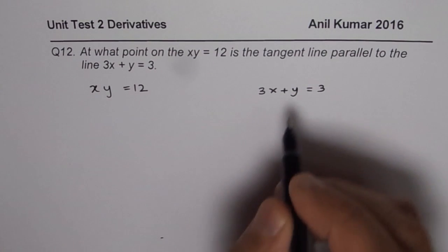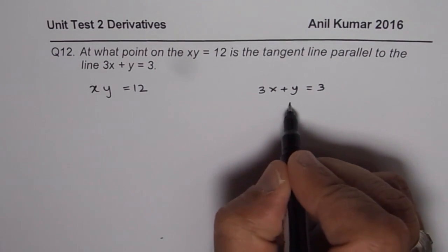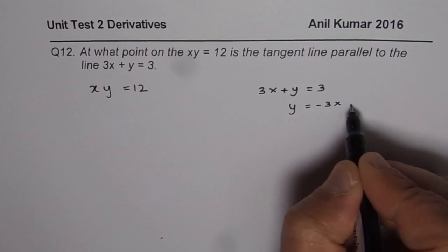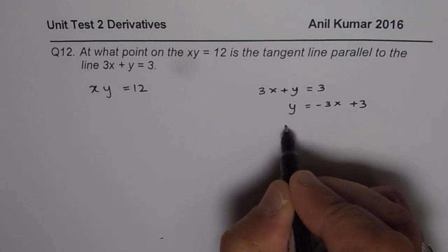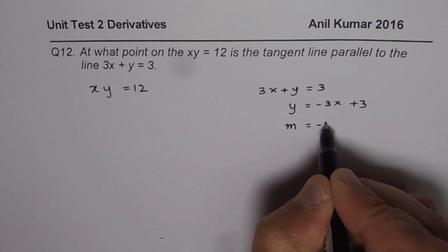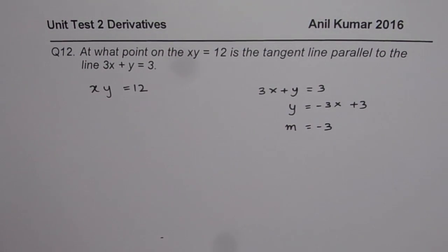That means the slope should be, let me rearrange this, y equals minus 3x plus 3. So we are looking for slope m equals minus 3 on this function. Now the major difficulty with students is to understand how to differentiate this type of function.